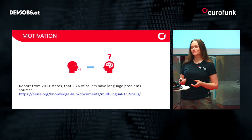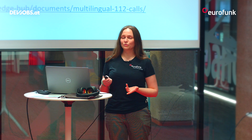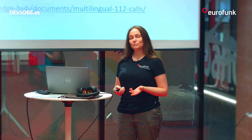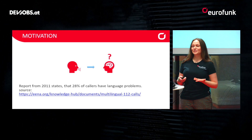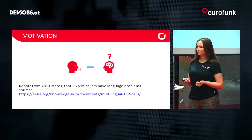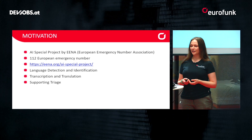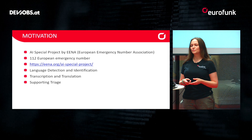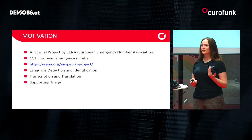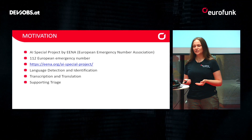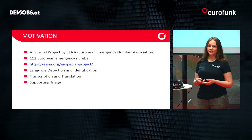Here is the motivation. From 2011, there was already a report from the 112 emergency number that 28% of callers have language problems. As the number has to ensure it can help everyone, this is a problem that has to be tackled. Therefore, the European Emergency Number Association, shortly called EENA, called for a special AI project to motivate companies to use AI to tackle problems like language detection and identification, transcription and translation, and also supporting triage if needed.